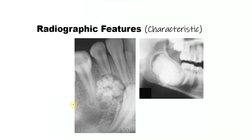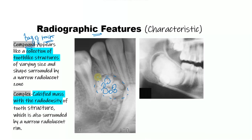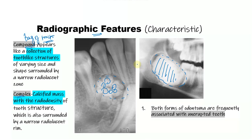The radiographic features are very conclusive. Compound has a famous appearance called a 'bag of teeth' — it essentially appears like a collection of tooth-like structures of varying size and density, covered by a radiolucent zone. The complex, on the other hand, bears no resemblance to a tooth; it is just a calcified mass with radio-density also surrounded by a narrow radiolucent zone. Notably, both types are associated with unerupted teeth and sometimes are present between roots.